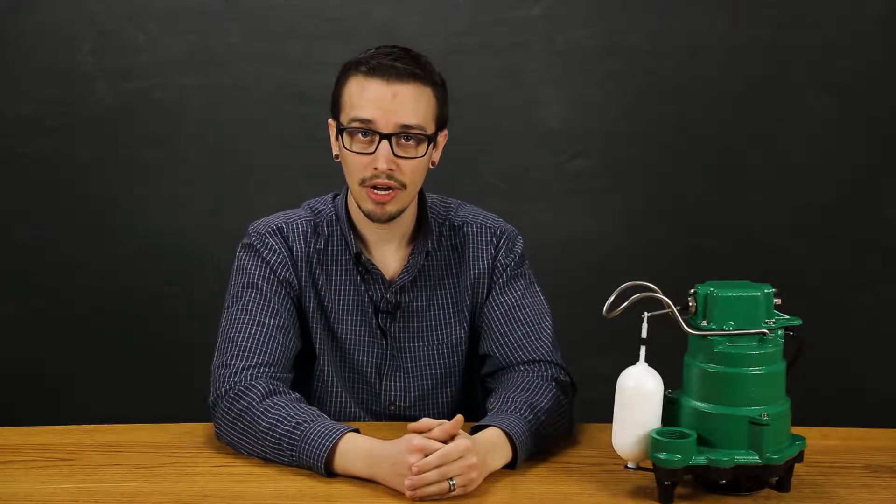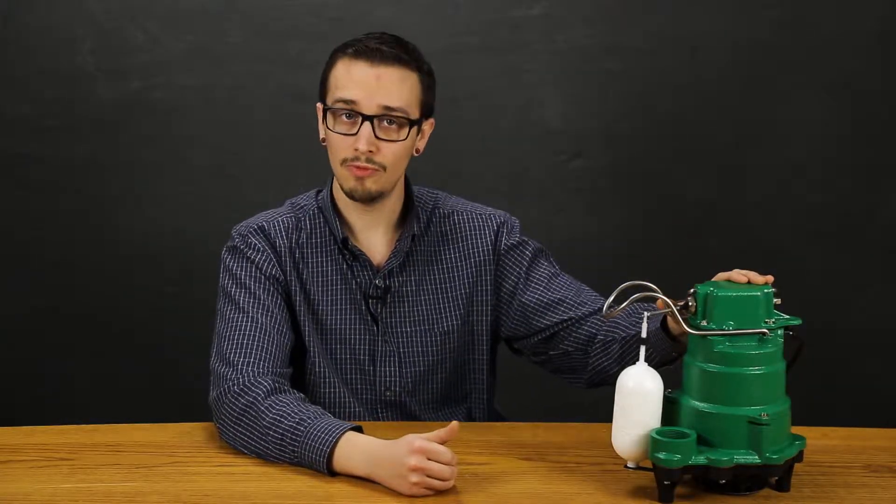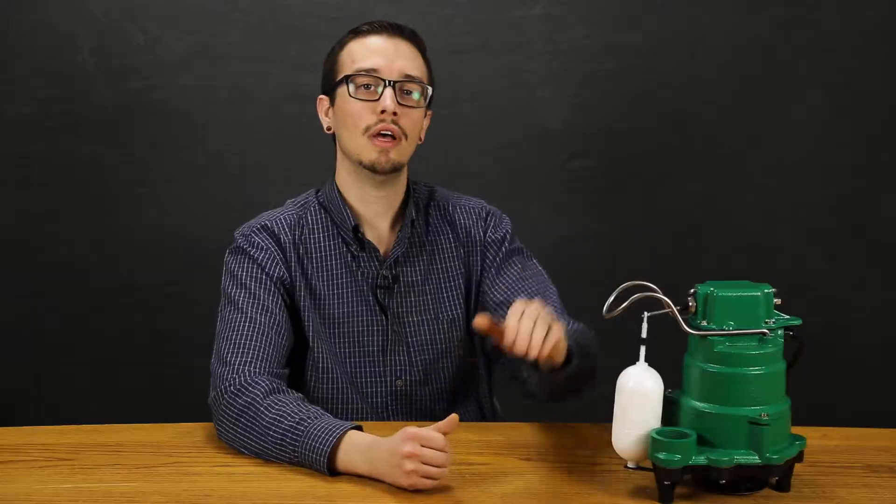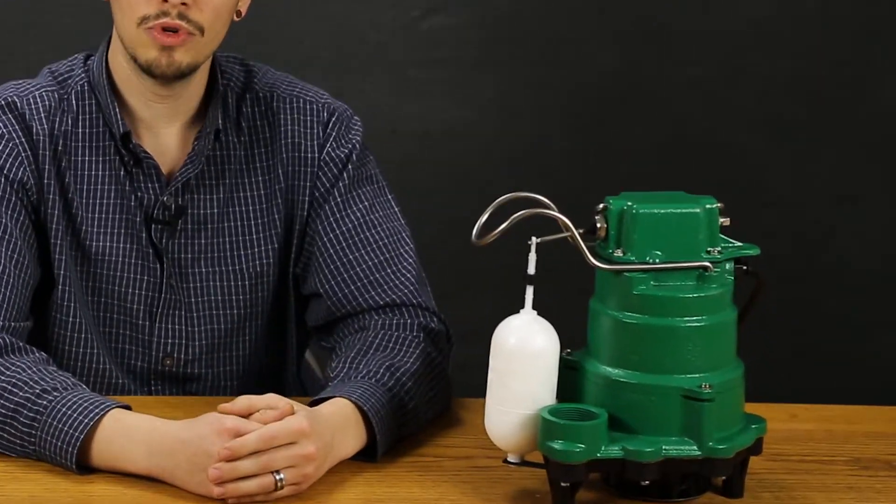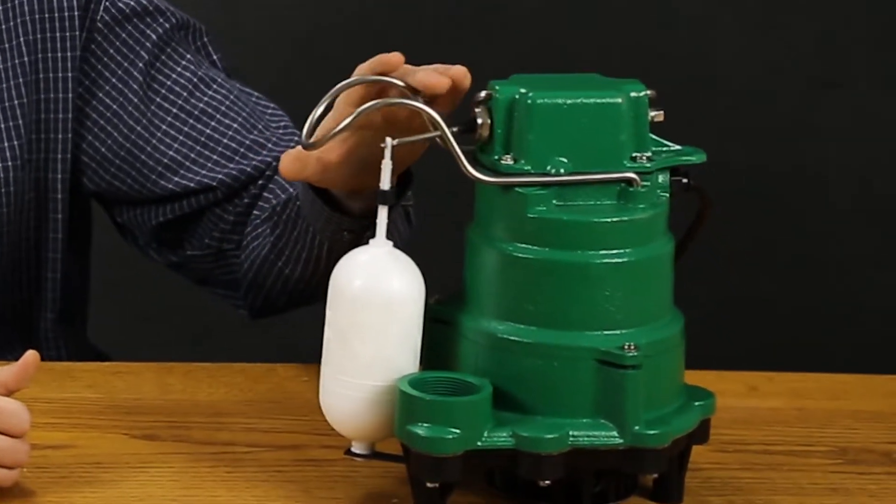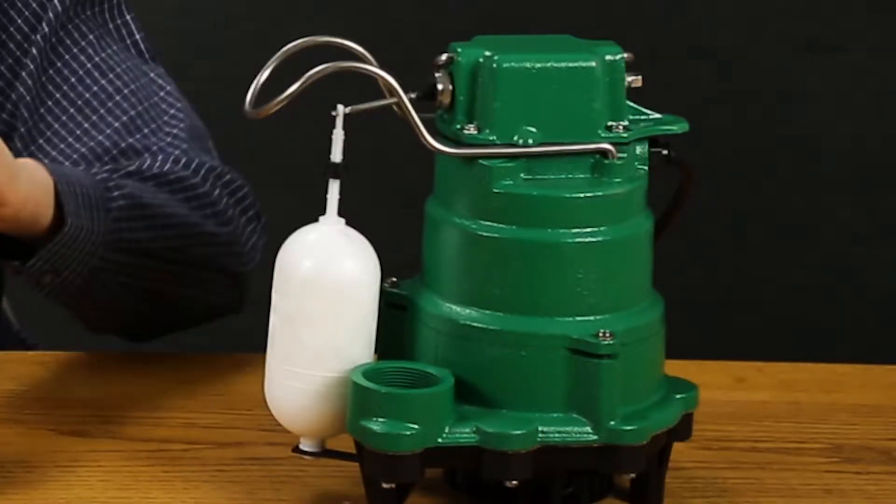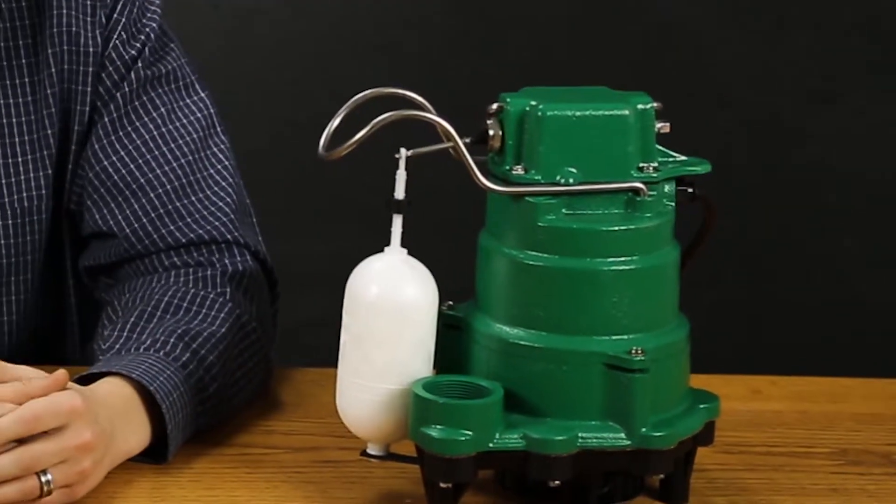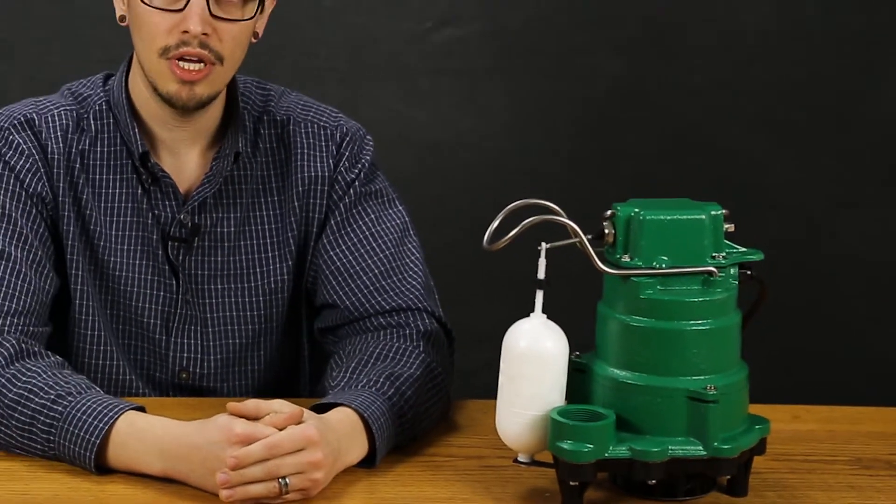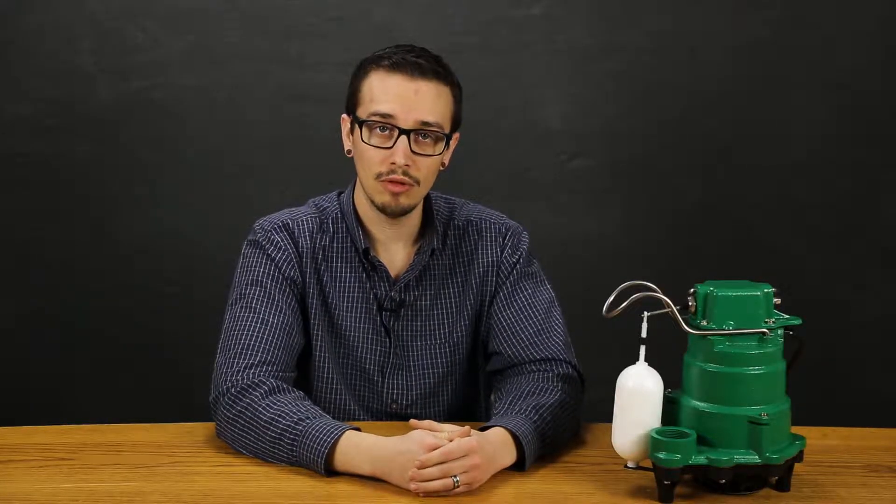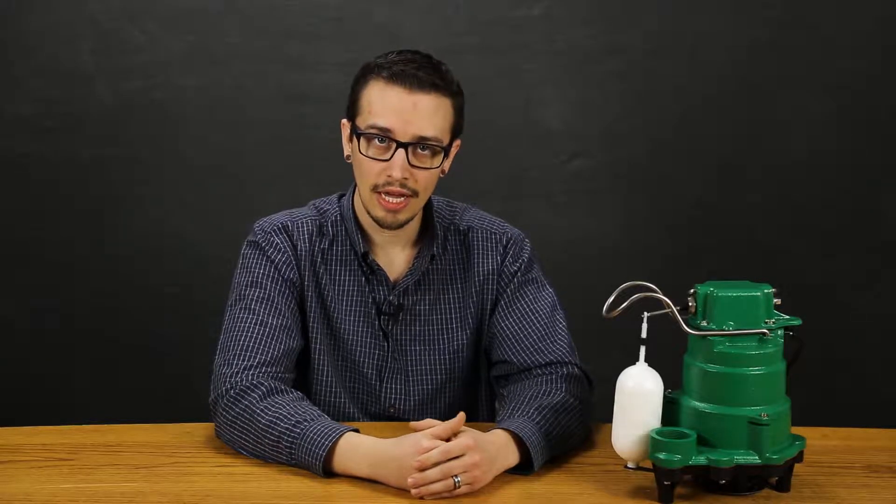We have here today the Myers MCI 050 as an example of what you can expect in this series. This is an automatic model which includes a two pole mechanical float switch and it is actually an integrated vertical float switch in this particular configuration, which is going to be ideal for those minimum sump diameters of roughly 10 inches. A manual version of this pump is also available and comes with no switch at all. The power cord is offered in 10, 20, and 30 feet.